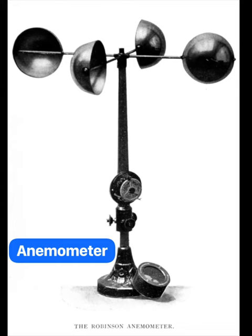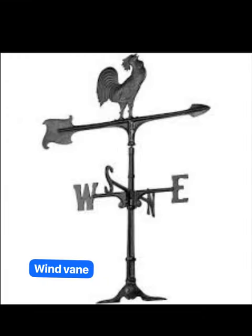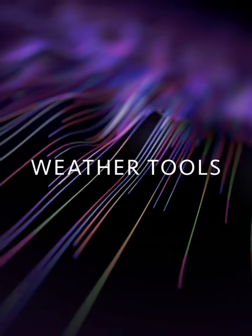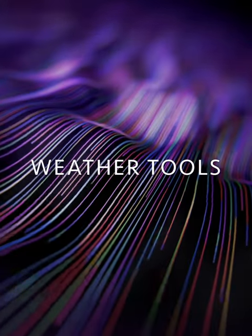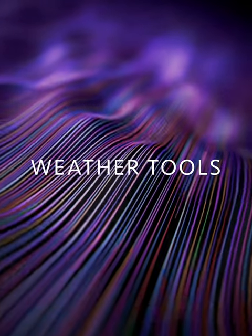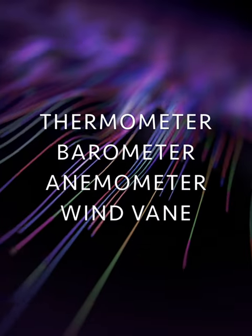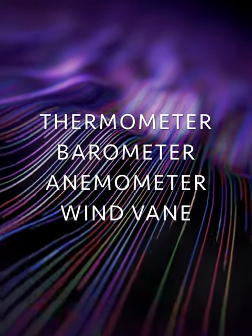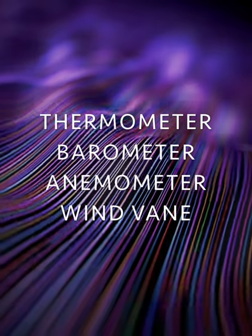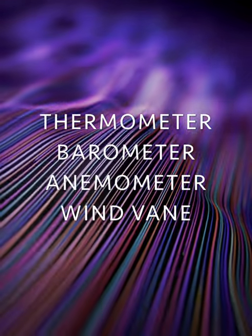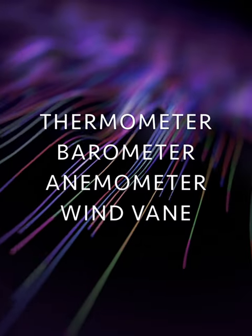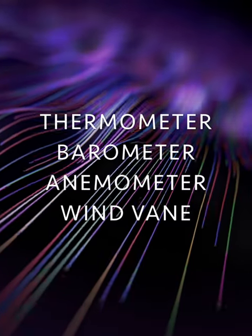Have you seen wind vanes on rooftops? A wind vane points in the direction from which the wind is blowing. Today you got to look at how meteorologists measure weather using different tools. You learned that meteorologists use tools such as a thermometer, a barometer, an anemometer, and a wind vane to help measure the weather.